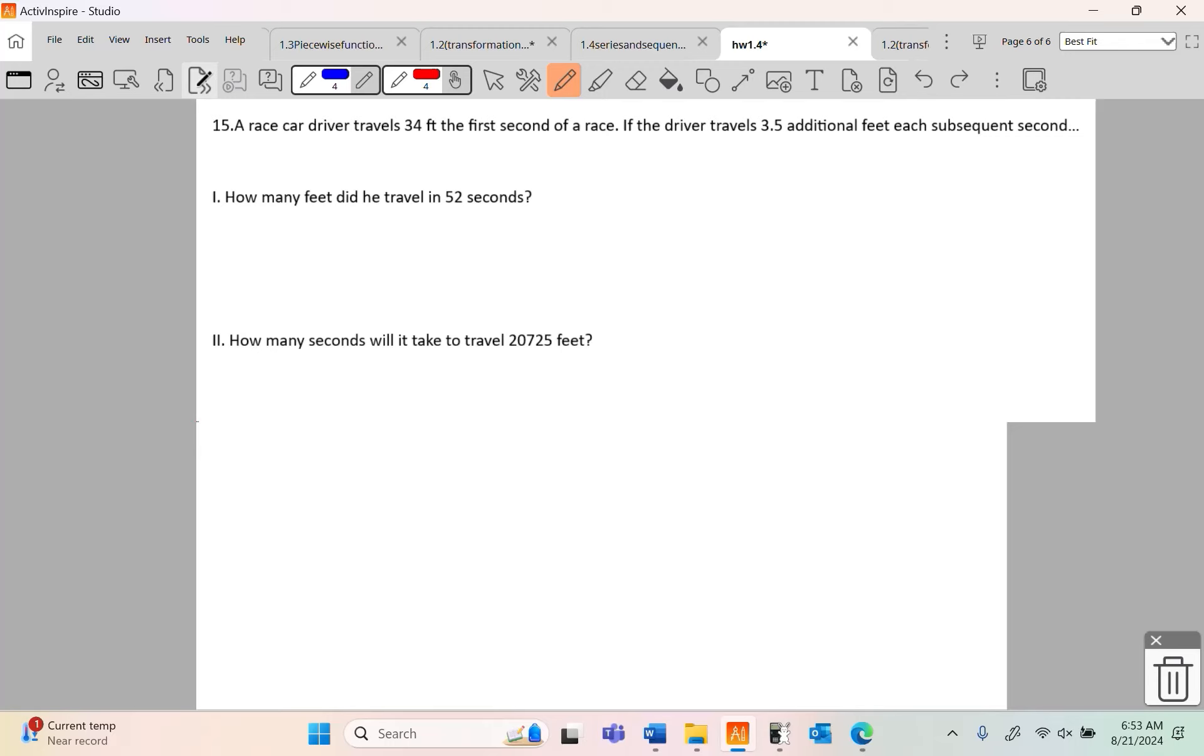15, we've got a race car driver. A race car driver travels 34 feet the first second of the race. And if the driver travels 3.5 additional feet each subsequent second, how many feet did he travel in 52 seconds? So what I'm doing is I'm adding 3.5 additional feet each second. And so like the first second, he travels 34. The next one's 37.5. The next second, 41, and so forth. What we have here is we have arithmetic.